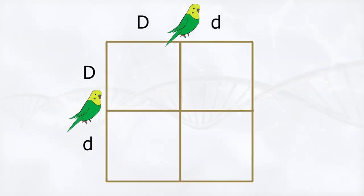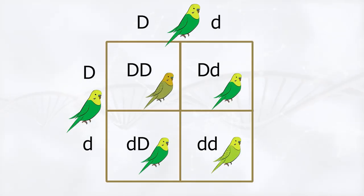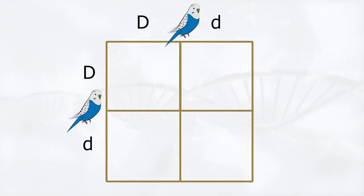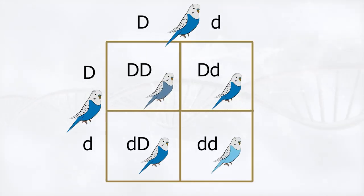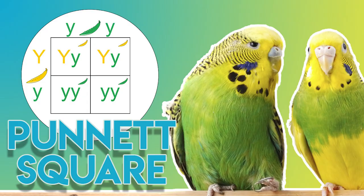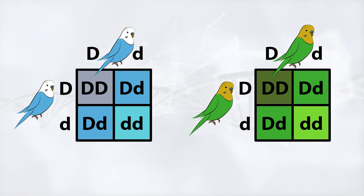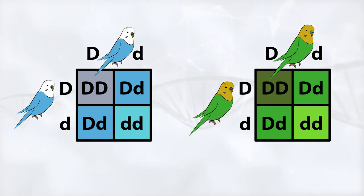One table will have all the green mutations and the other will have all the blue mutations. If you need to refresh your memory about what a Punnett square is, I will keep a link in the description below. In order to see all the mutations that come from the dark factor, I will show you on the left the outcome of two cobalt blue budgies, and on the right the outcome of two dark green budgies.